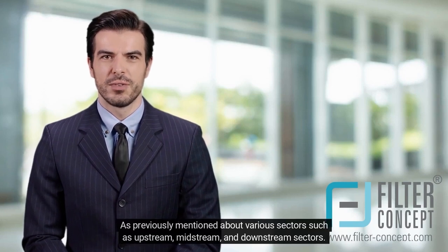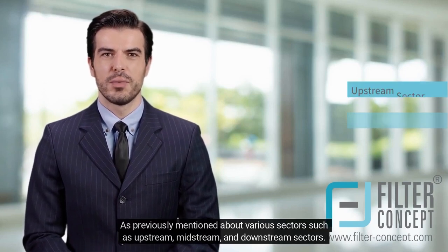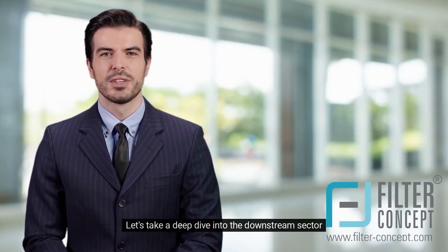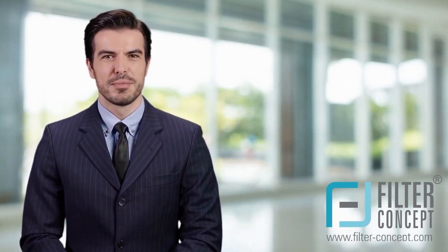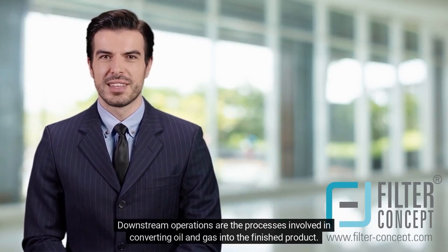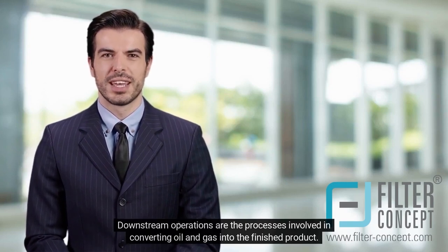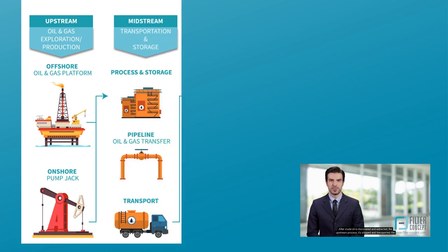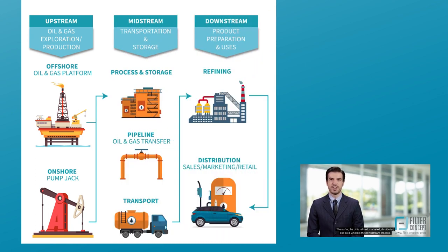As previously mentioned, there are various sectors: upstream, midstream, and downstream. Let's take a deep dive into the downstream sector. Downstream operations are the processes involved in converting oil and gas into the finished product. After crude oil is discovered and extracted — the upstream process — it is shipped and transported — the midstream process. Thereafter, the oil is refined, marketed, distributed, and sold, which is the downstream process.